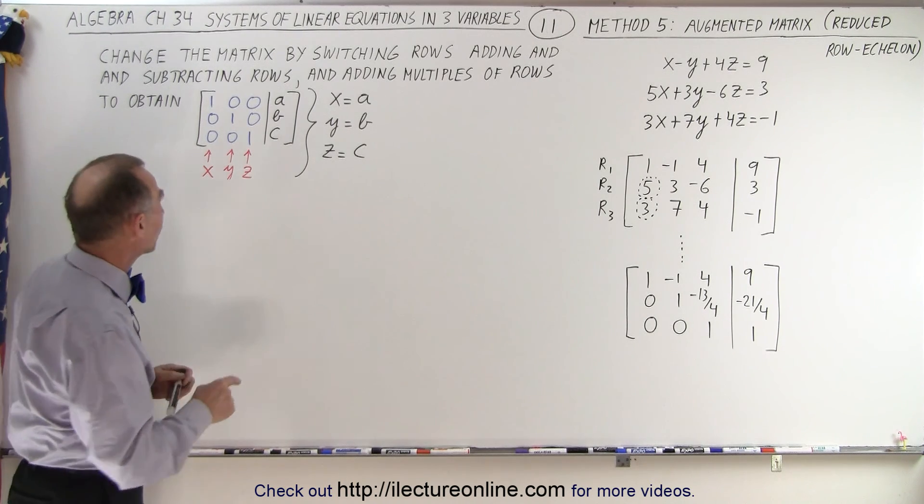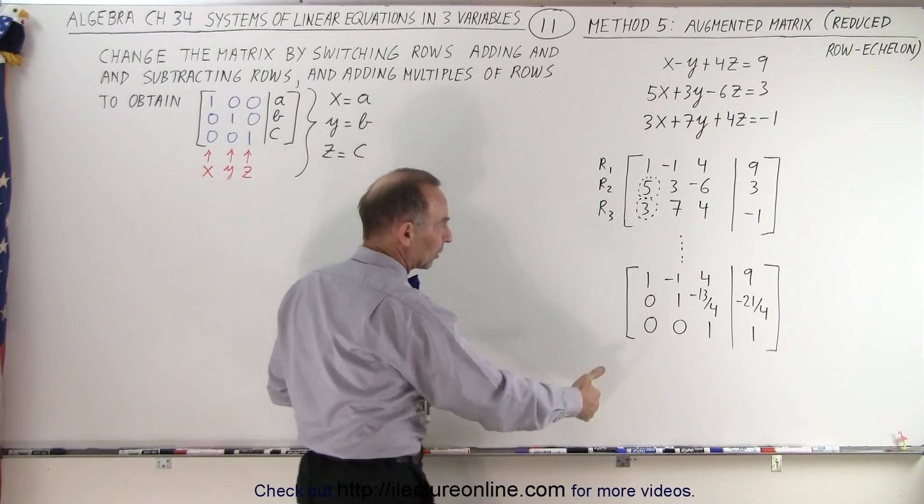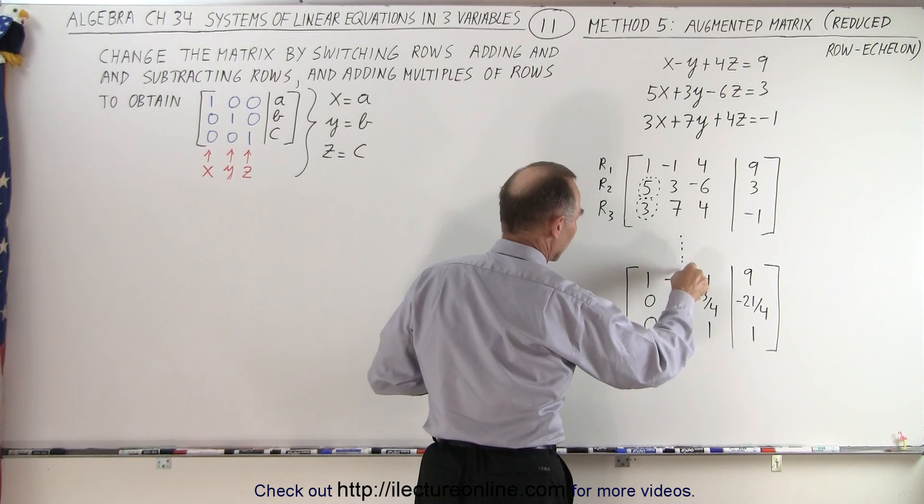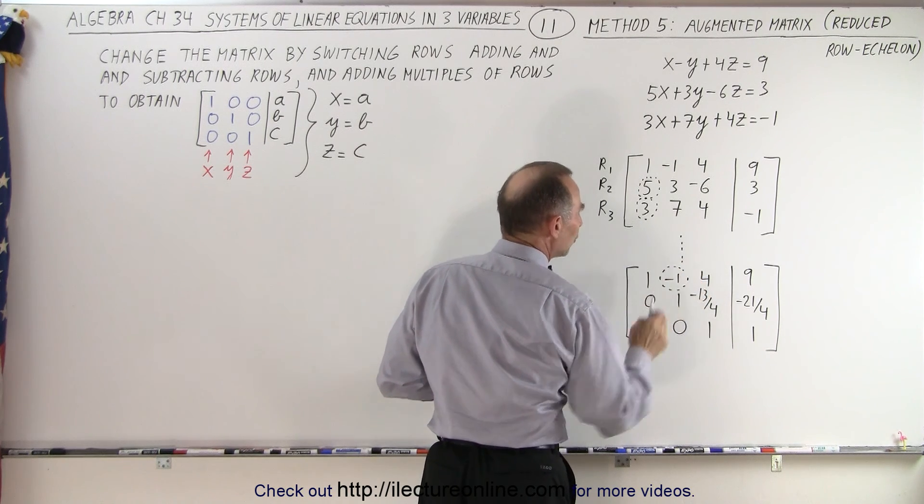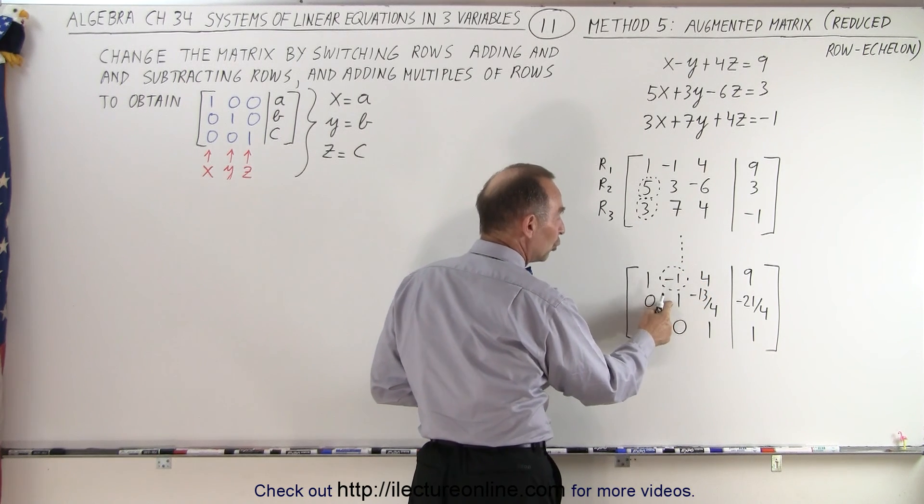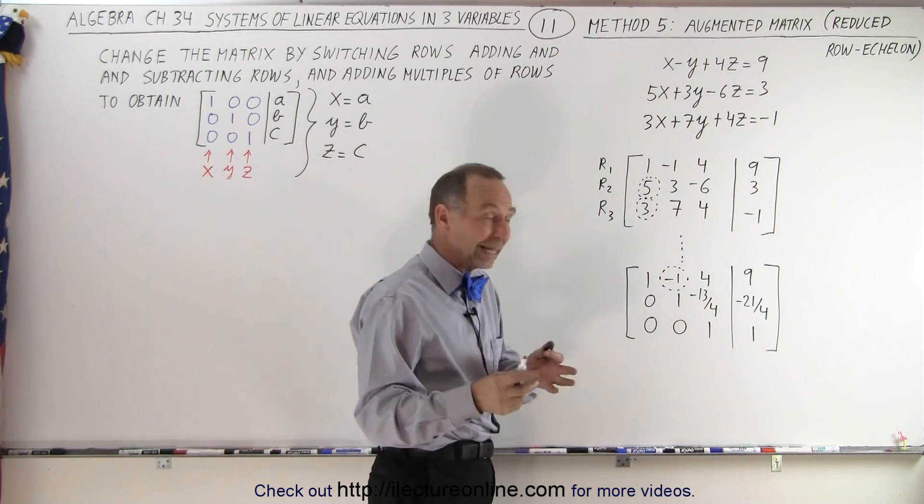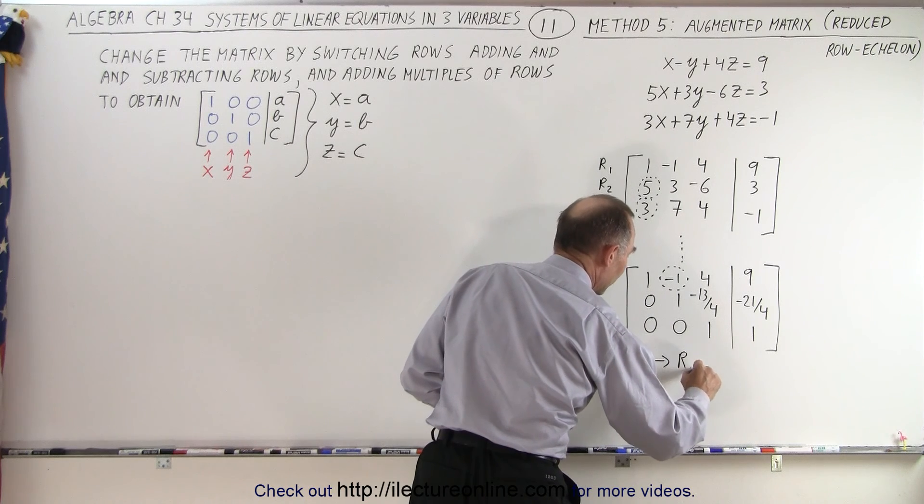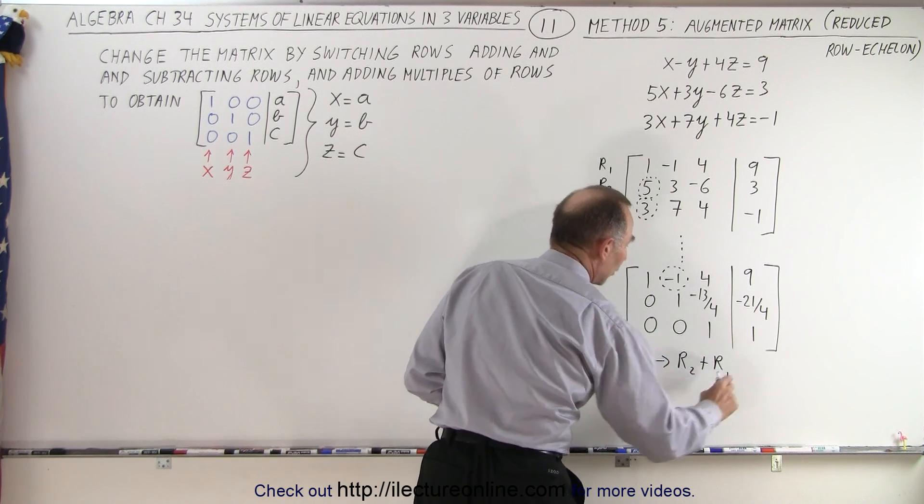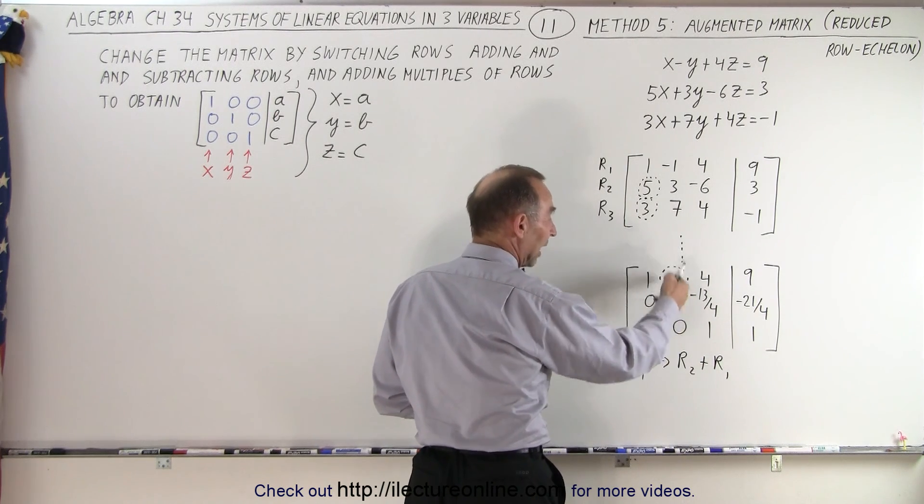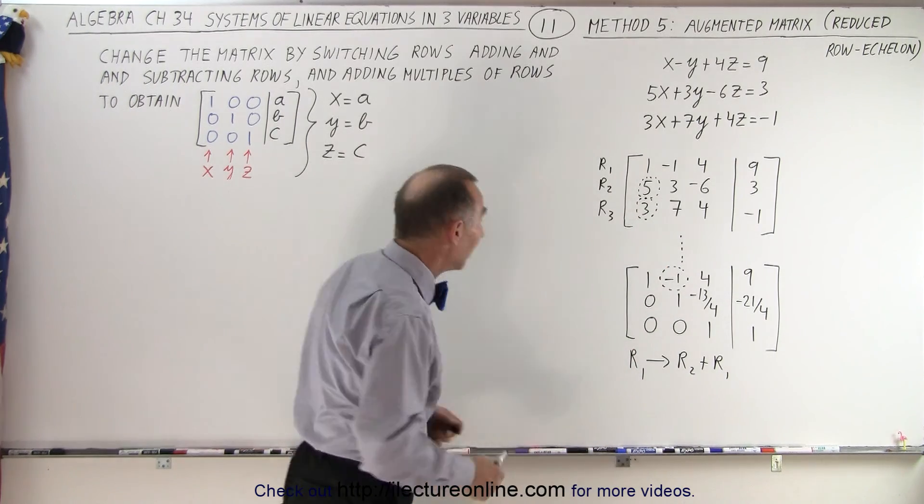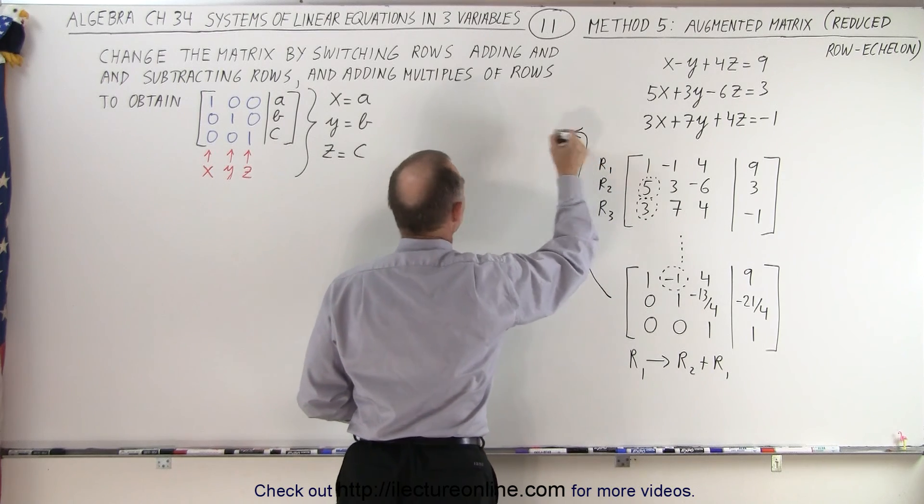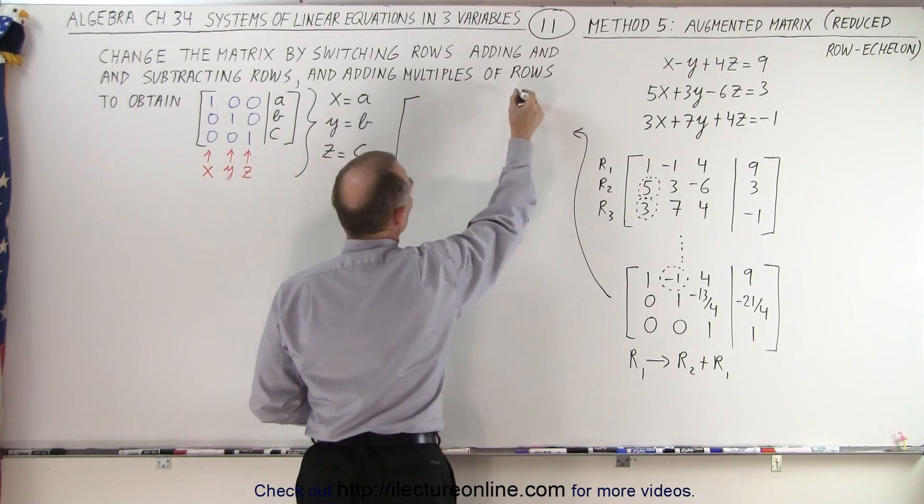So the next thing we want to do is notice we want to go one column at a time. We want to turn this into a zero. And we can do that by simply adding row two to row one. So we're going to replace row one. We're going to take row one and replace it by simply the sum of row two and row one, because when I add these two together, I get zero. And that's what I'm trying to get. So if we do that, we get the following. So let's write down the new matrix.